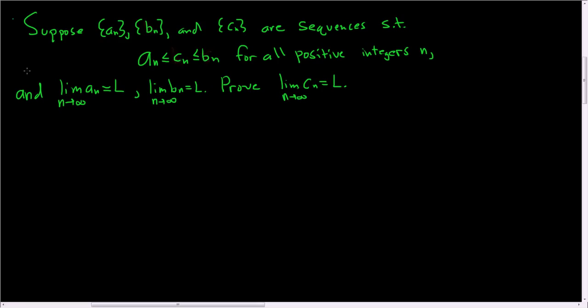In this video, we're going to prove what's called the squeeze theorem, or pinching theorem, or sometimes even the sandwich theorem. I prefer squeeze. It basically says if we have three sequences a_n, b_n, and c_n, and c_n is trapped between the other two, a_n and b_n, and if a_n converges to l and b_n converges to l, then whatever is trapped in the middle also must converge to l. So it's pretty clear intuitively; we just have to come up with a proof.